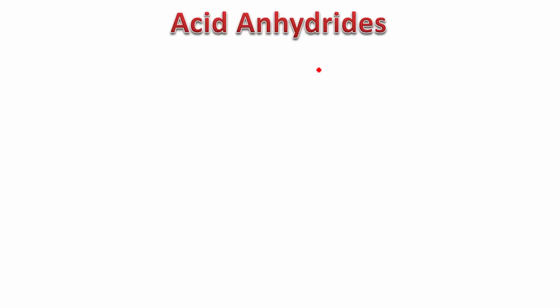Hello and welcome to this video on the IUPAC nomenclature of acid anhydrides. We will first begin with understanding what acid anhydrides are. Acid anhydrides are the result of two carboxylic acid molecules coming together and losing a molecule of water.